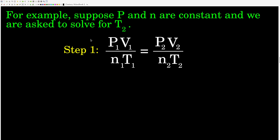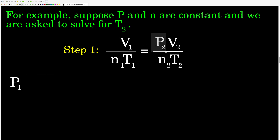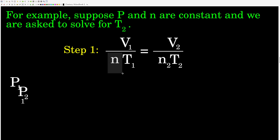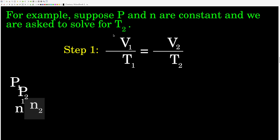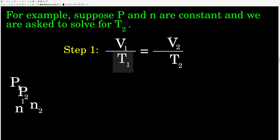For example, let's say we're doing a combined gas law problem and we're told that P and N are constant and we want to find T2. Step one says get rid of everything that's constant. So we're going to take both of the P's — P1 and P2 — and get rid of them. Cross them off, throw them out. Now what we have left is a simplified equation, which is the one we want to use to do our calculations. That's all there is to step one.